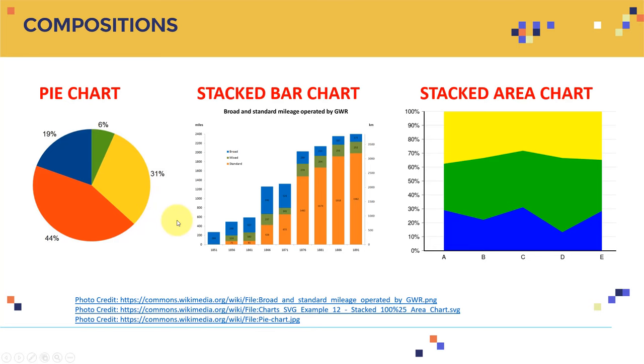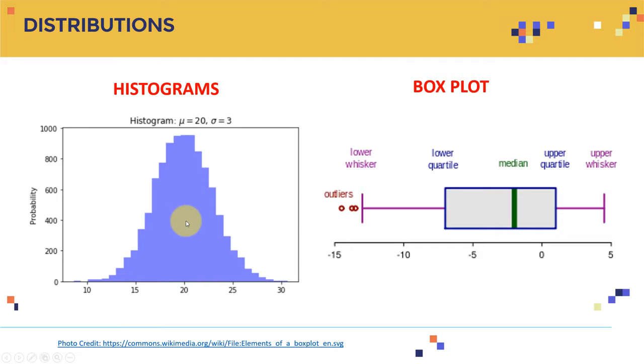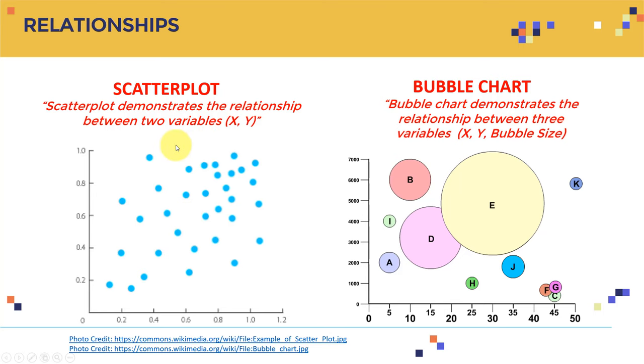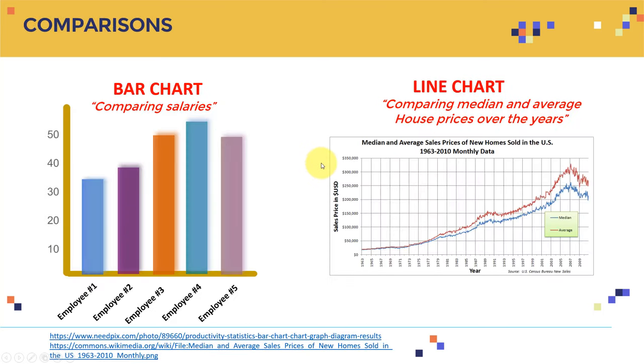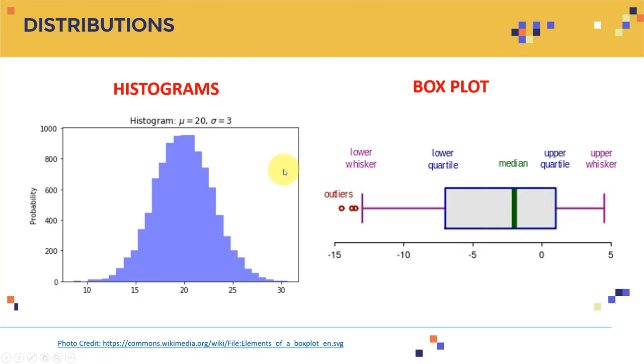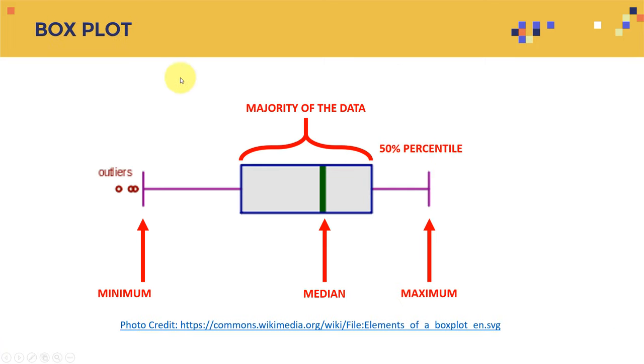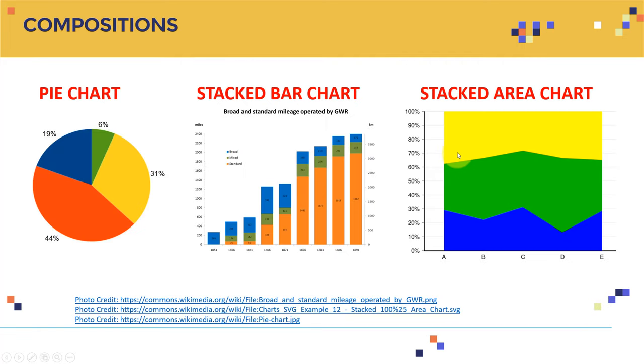That's all what I have for this lecture. I hope you enjoyed it. Please bear in mind that I have relationships, such as scatterplot and bubble chart. I have comparisons, such as bar chart and line chart. I have distributions, such as histograms and box plots, and this is the box plot explanation. And here I have compositions, including pie chart, stacked bar chart, and stacked area chart as well.